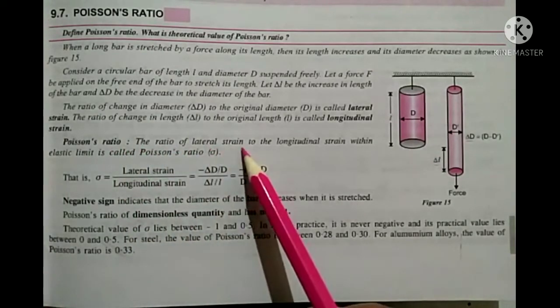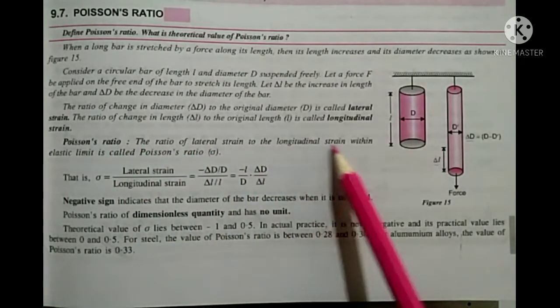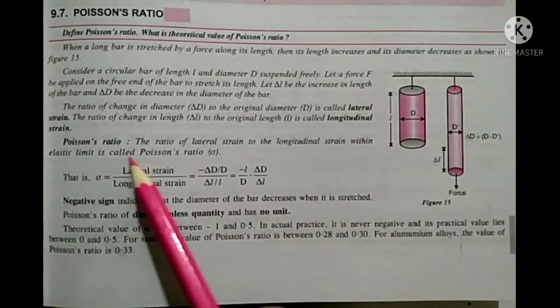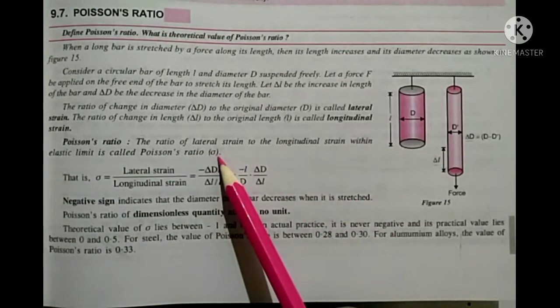Poisson's ratio: The ratio of lateral strain to longitudinal strain within the elastic limit is called Poisson's ratio and is denoted by sigma.